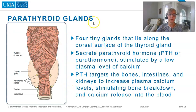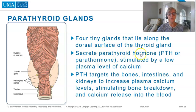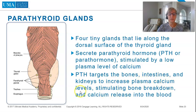The parathyroid glands are four tiny glands that lie along the dorsal surface of the thyroid gland and secrete parathyroid hormone, PTH, or parathormone, stimulated by low plasma levels of calcium. PTH targets the bones, intestines, and kidneys to increase plasma calcium levels, stimulating bone breakdown and calcium release to the blood.